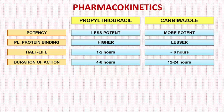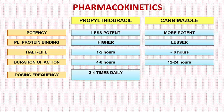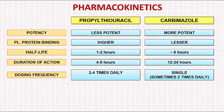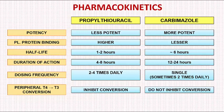The long duration of action is a distinct advantage of carbamazole because it affects dosing frequency. With propylthiouracil, the drug has to be given 2 to 4 times a day, which is inconvenient for the patient. Whereas with carbamazole, the drug needs to be given only once or sometimes twice a day. Regarding peripheral conversion of T4 to T3, this occurs only with propylthiouracil and not carbamazole, making propylthiouracil preferable in patients with thyroid storm where quick antithyroid action is required. This blockade of peripheral conversion of T4 to the more active hormone T3 is beneficial in thyroid storm.